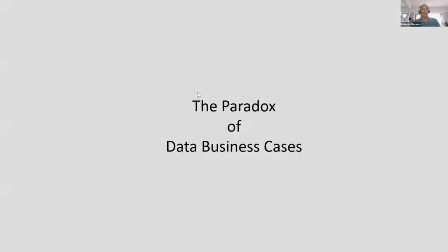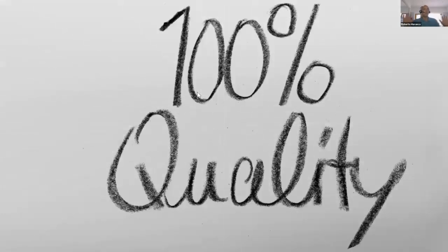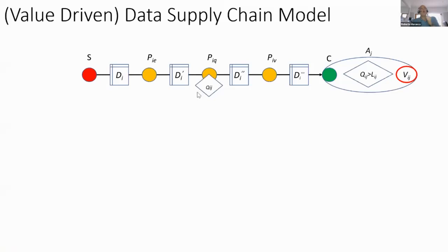There is what we call the paradox of the data business case: when you ask people how they want their data, they don't have the capability to articulate it. They'll tell you either give me 100% quality or I can't use it — which is usually a very expensive proposition. So what we're trying to do by introducing a value-driven data supply chain is to break this paradox.